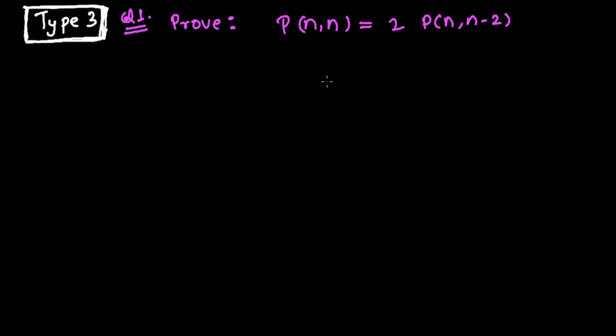We're learning to solve different types of questions from the permutation mathematics chapter. Here is the third type: the first question in the third type is proving. You may get proving questions in the permutation chapter.